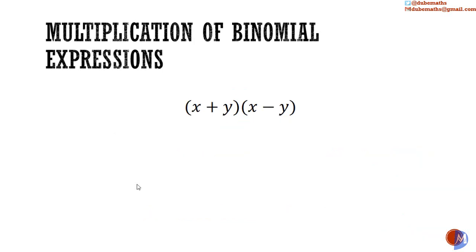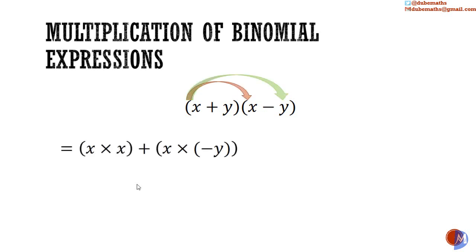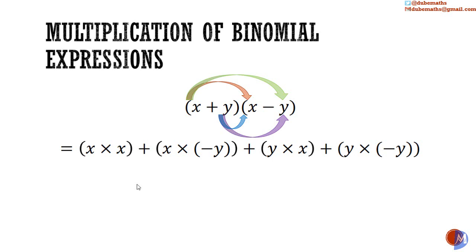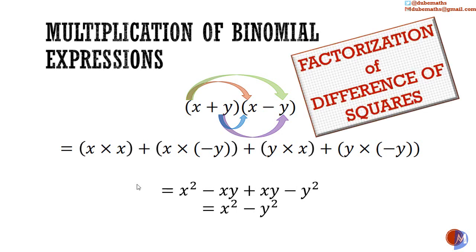And we have, for example, x minus y multiplied by x plus y. This multiplication gives an interesting result: x squared minus xy plus xy minus y squared, which simplifies to x squared minus y squared. Starting with an expression in the form x squared minus y squared and getting to the factors x plus y and x minus y is the last form of factorization we will do: factorization of difference of squares. More on this in a separate video.